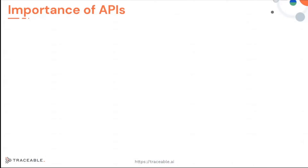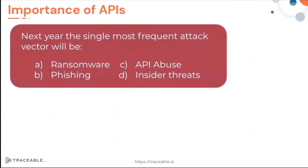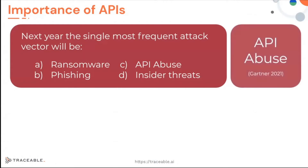APIs are important. In terms of frequency of attacks based on APIs, here's a pop quiz: do you think the most frequent attacks are ransomware, API abuse, phishing, or insider service? API abuse is the most frequent one — at least that's what Gartner tells us.